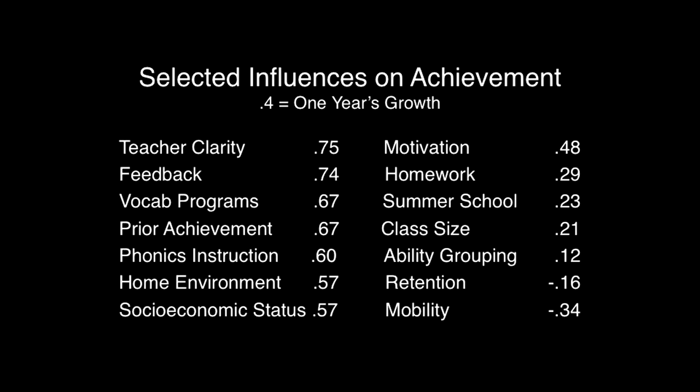Here are just a few of the influences Hattie studied and their accompanying effect size. You can see some of these are outside of a school's control — things like home environment and socioeconomic status, both of which have an effect size of 0.57, meaning just those things alone will lead to over a year's worth of growth before a student even walks in the door.